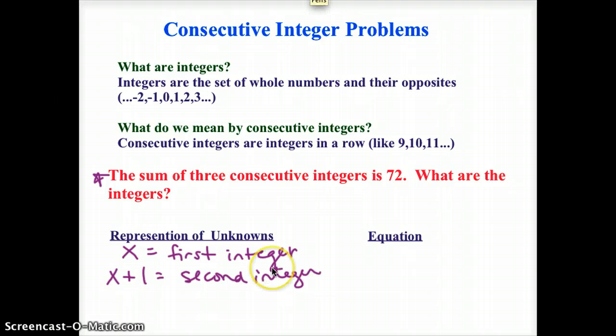Now if I look for my third integer, that's going to be one more than my second integer, so it's going to be two more than my first integer. I'm going to call that x plus 2. It's going to be my third integer.